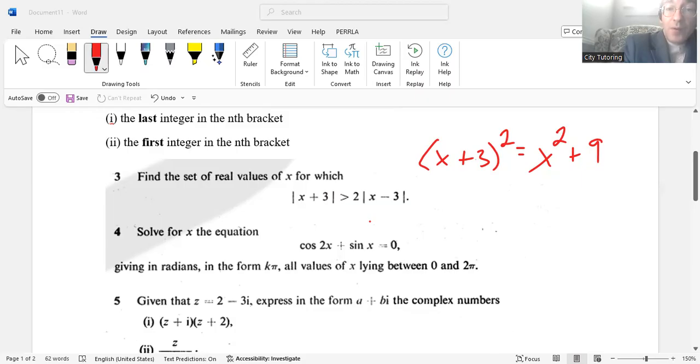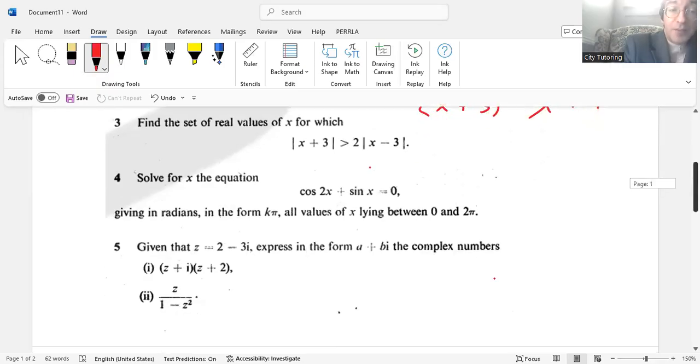Number five was the imaginary numbers, complex numbers. I would say most candidates knew how to manipulate complex numbers in algebraic form, but the standard of accuracy in both parts was deplorable.